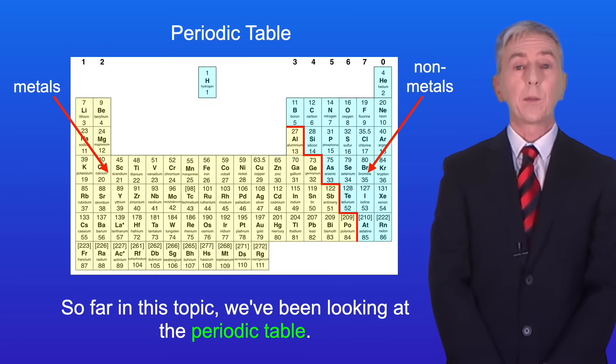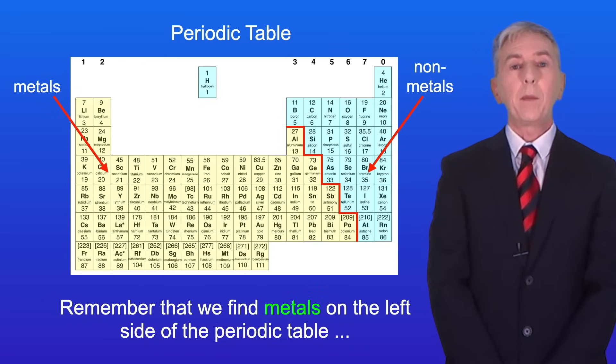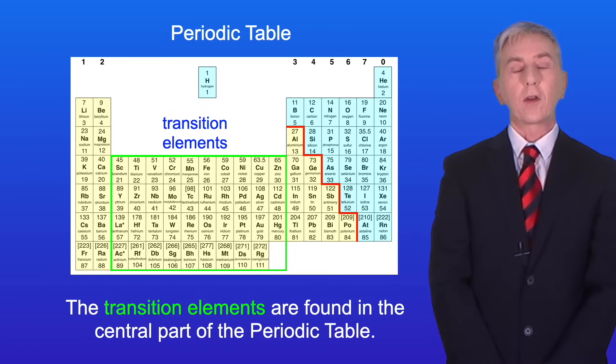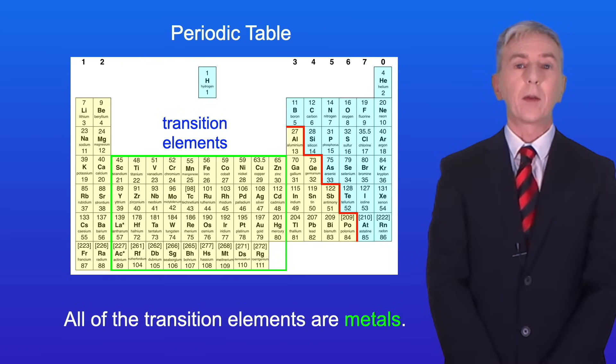So far on this topic we've been looking at the periodic table. Remember that we find metals on the left side of the periodic table and non-metals on the right. The transition elements are found in the central part of the periodic table and all of the transition elements are metals.